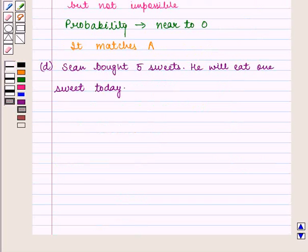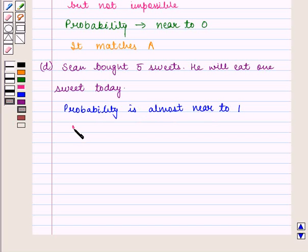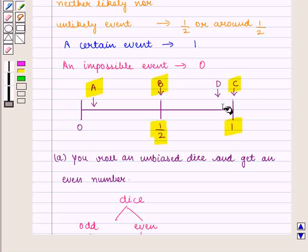Now we have another event which says Seam bought 5 sweets. He will eat 1 sweet today. It is almost certain that Seam will eat at least 1 sweet today. So probability is almost near to 1. We can say it is a likely event. Since its probability is near to 1, therefore it matches D.